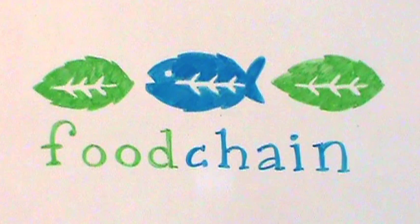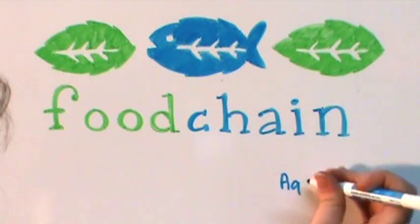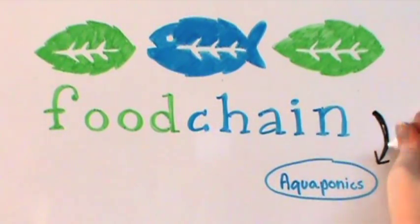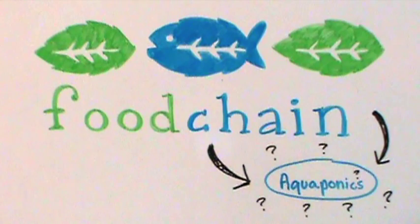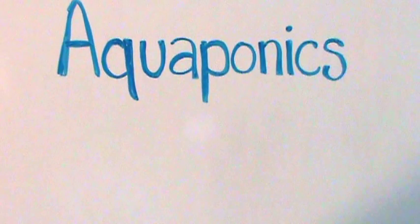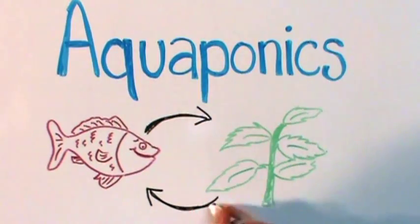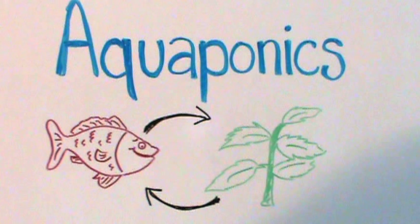Food Chain's first project has been to develop Kentucky's first indoor commercially scaled aquaponics system. But what is aquaponics? Aquaponics is a way of growing both fish and plants in the same system so that they both benefit each other.